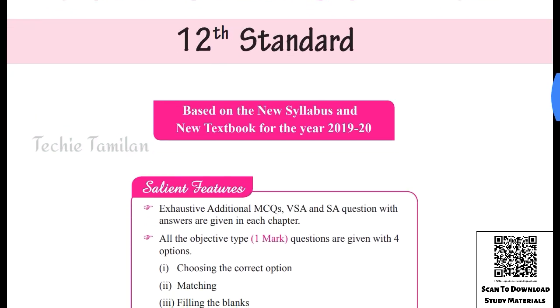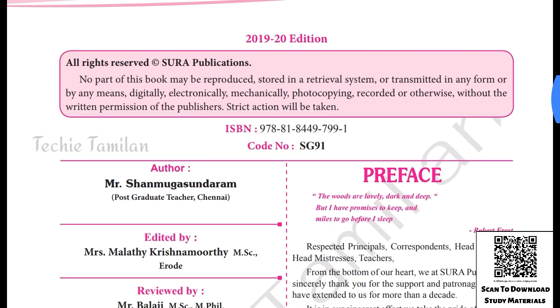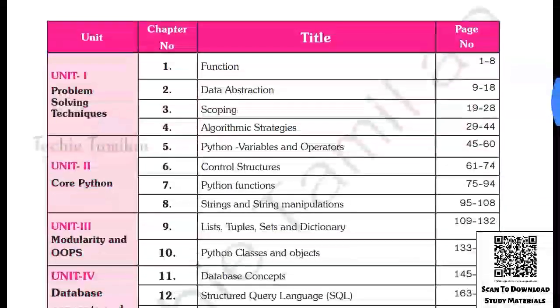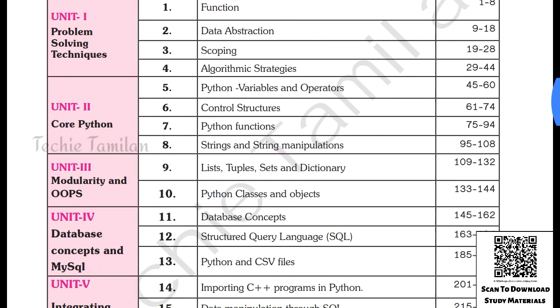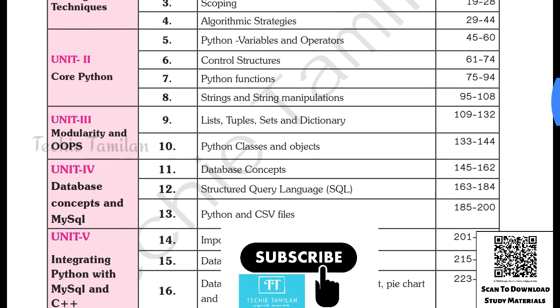We will be able to show you more about the computer science full guide. This is the first chapter of the bookshop. This is a sample of six chapters. This is the control structure.